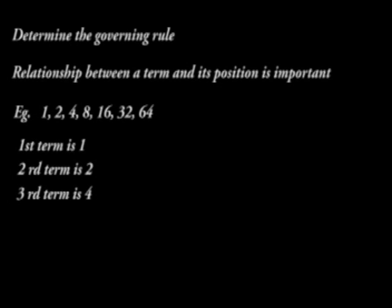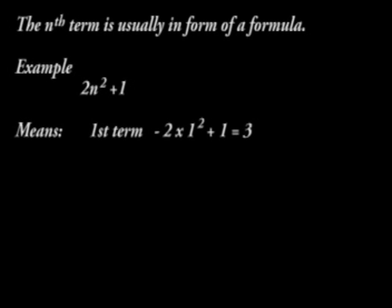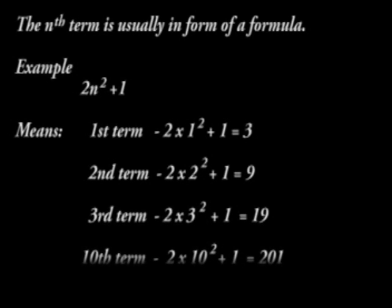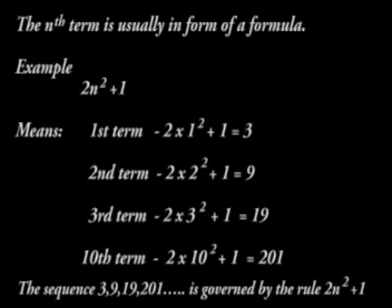Usually, letter N is used to represent numbers. In the same way we have first, second, third terms, we can have Nth term. The Nth term is usually in form of a formula. For example, 2N squared plus 1 means the first term is 2 times 1 squared plus 1. Thus, the sequence 3, 9, 19, 2, 0, 1 is governed by the rule 2N squared plus 1.